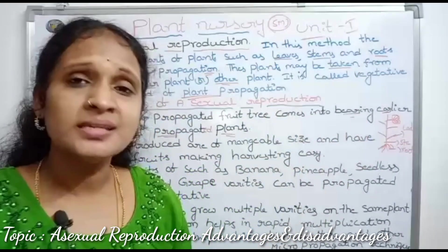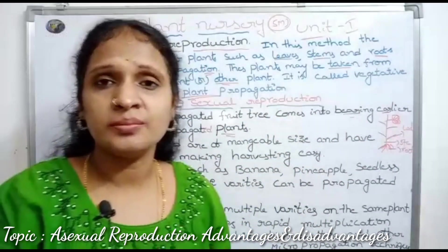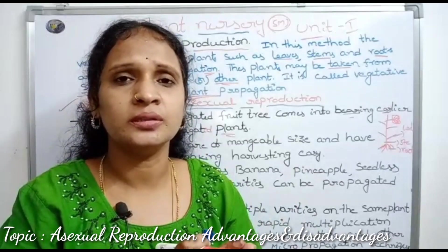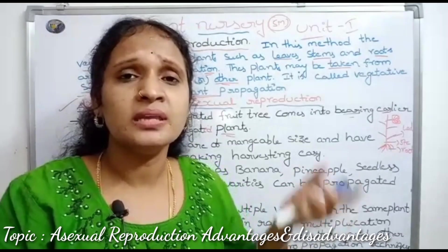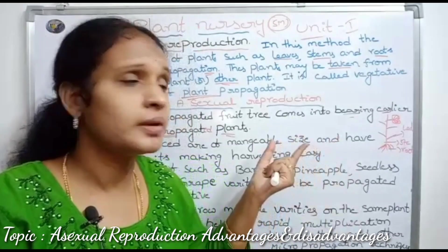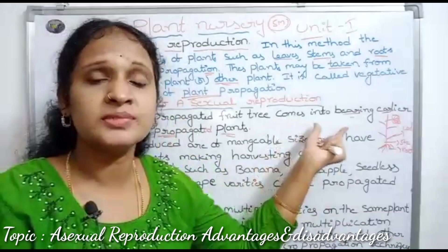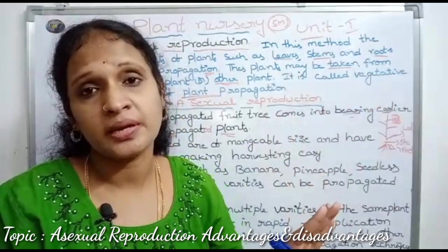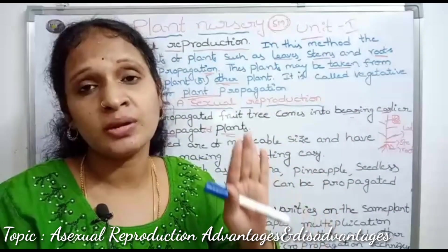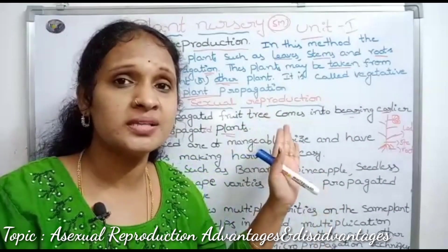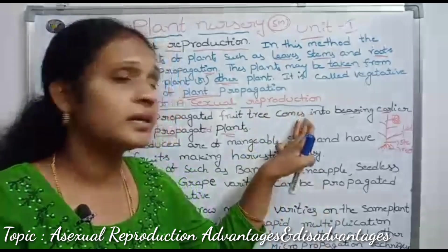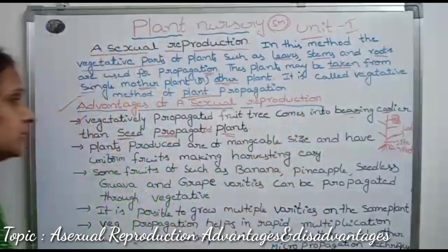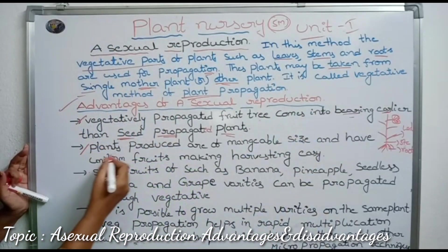When a normal seed germinates, the plant takes a lot of time to develop. So vegetative propagation produces fruiting plants much earlier compared to normal seed propagation.